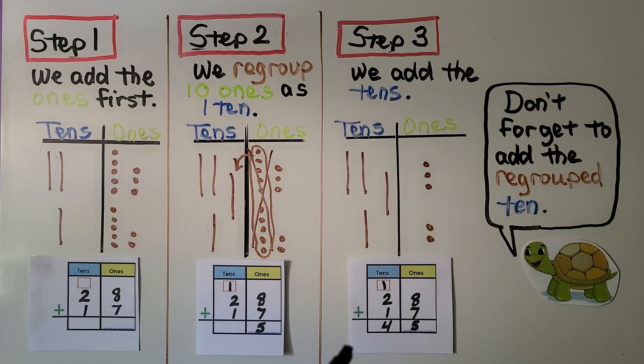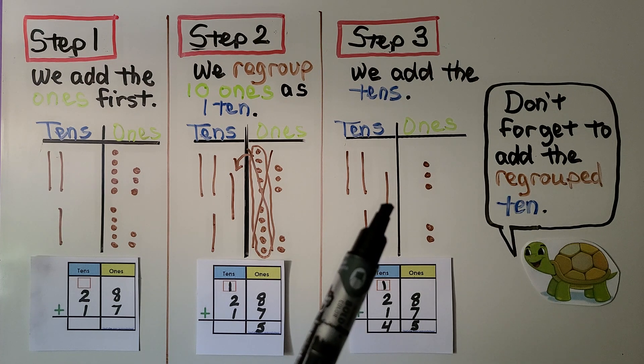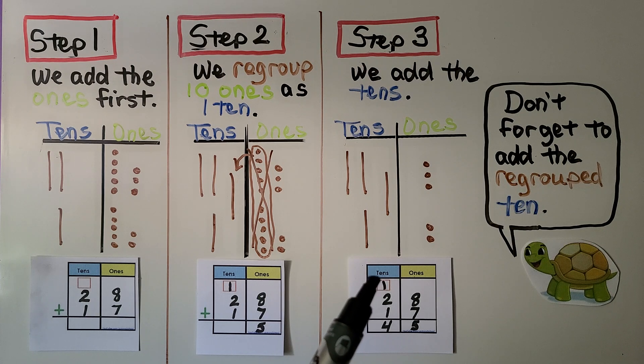Now for our third step, we add the tens. We have a 1 plus a 2 plus a 1, that's 4. 28 plus 17 is equal to 45. We don't forget to add that regrouped ten. You have to remember to add that.